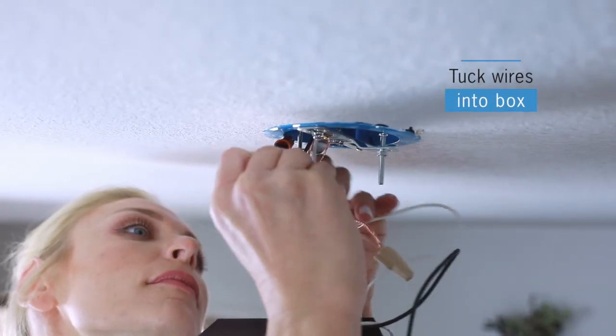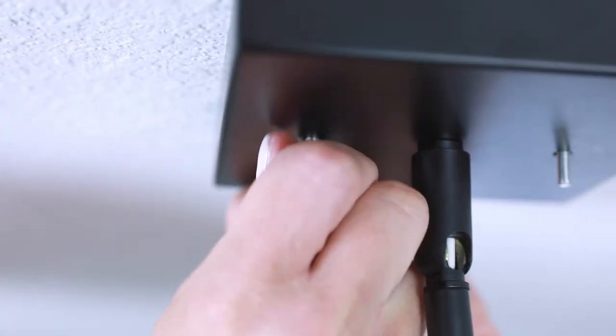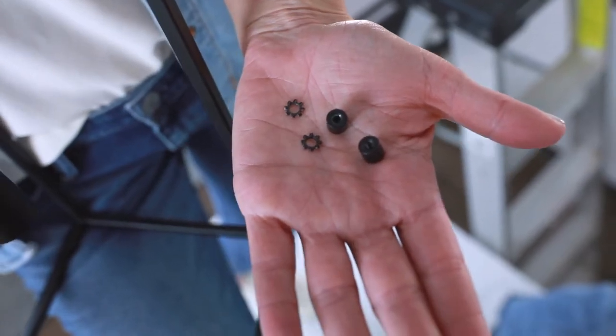Carefully tuck wires and wire nuts into electrical box. Secure canopy to mounting bracket using cap nuts and star washers.